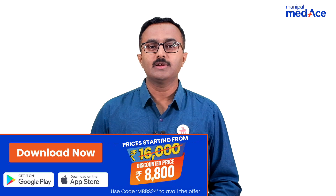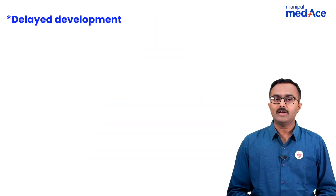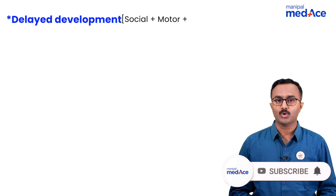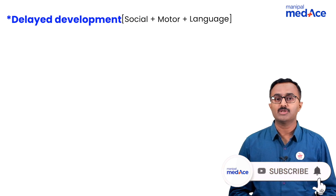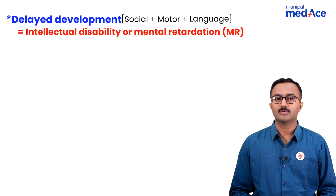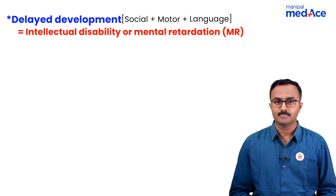We have seen a delayed development in terms of social, motor, and language milestones. It is referred to as global developmental delay, or otherwise intellectual disability, or previously referred to as mental retardation.